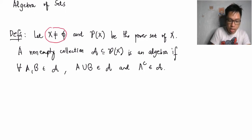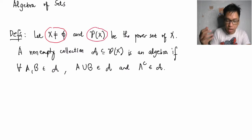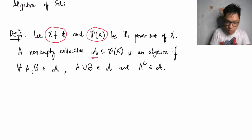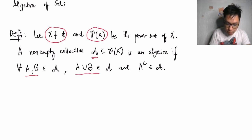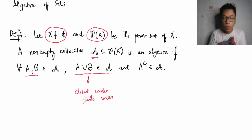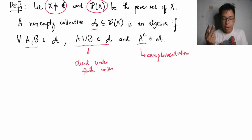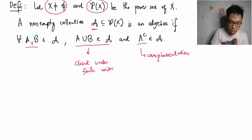Given that you have a non-empty set X, this defines the collection of subsets of X. If you have a non-empty collection denoted by script A, such that script A is a subset of the power set of X, then this is called an algebra if, for every A and B, the union is in that set and its complement is also in that set. So an algebra is closed under finite union and closed under complementation. Those are the two requirements.